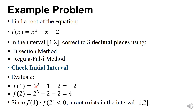If we put x = 1: x³ gives 1, minus sign same, x gives 1, minus sign same, after simplification we get -2. Same process for the next step. Since f(a) × f(b) < 0, a root exists in the interval [1, 2], because the value of f(a) is -2.